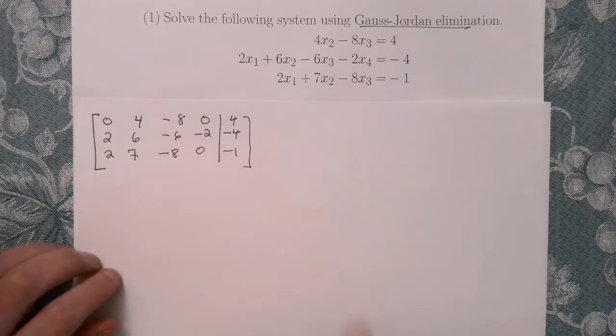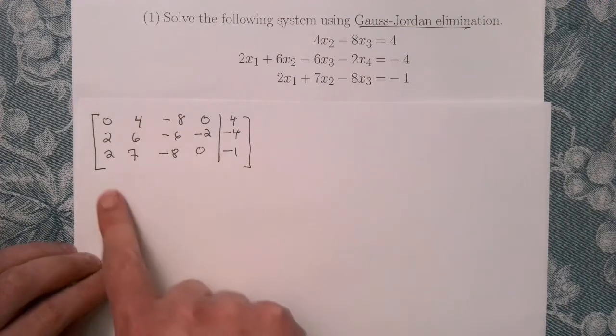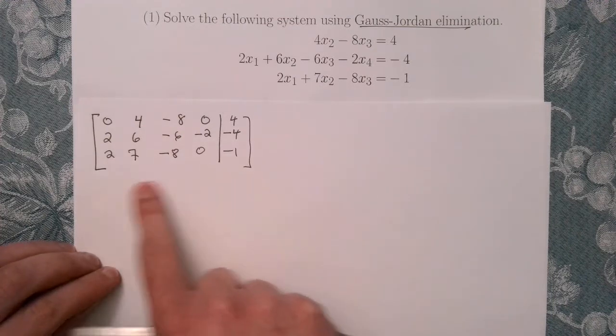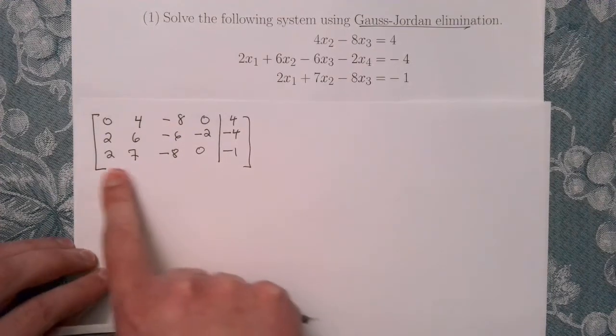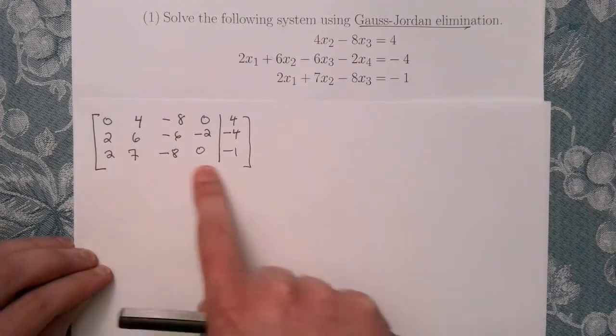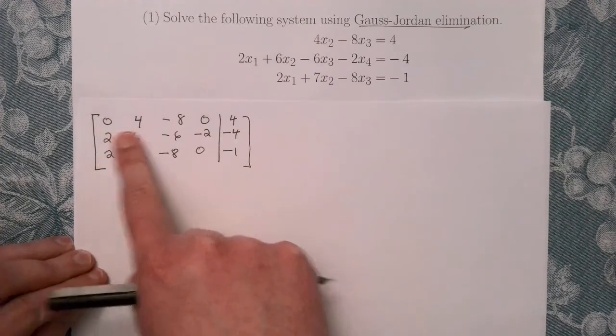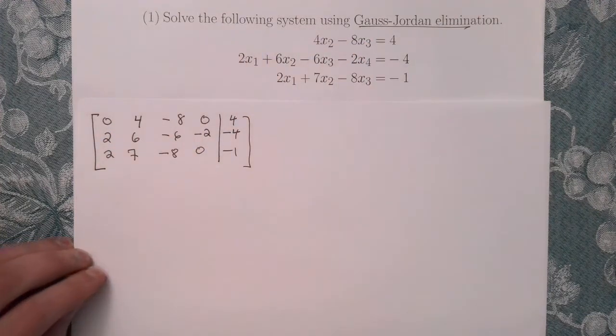If I write this in an augmented matrix, I've got the following. This represents the coefficient matrix, so these numbers are coming from the coefficients here.